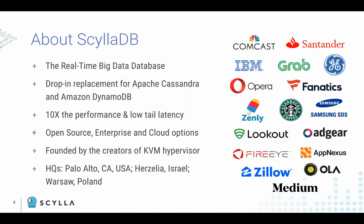We also provide Docker and AMI images if you're using AWS. Scylla Enterprise, the second flavor, is a closed-source product based on the open-source core with additional features around security and cluster management capabilities. The last one is Scylla Cloud, which is a database as a service managed by Scylla engineers, based on Scylla Enterprise deployments. Scylla DB, the company, is getting close to 100 employees and they are located around the world.